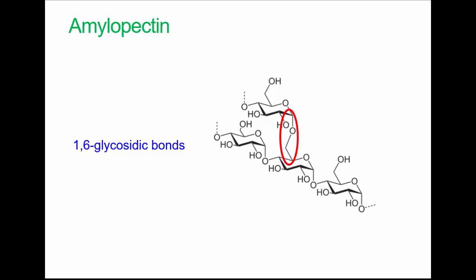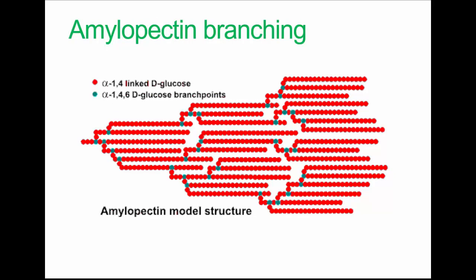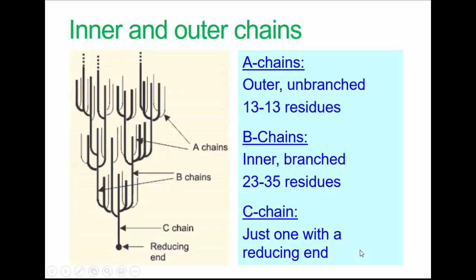Whether we have enzymes to digest the 1-6 bonds — gut bacteria probably do — it requires a different enzyme. Looking at a comparison of the two: chain length, bonding, we notice amylopectin can have millions of residues potentially. Amylopectin forms a regular branched structure, and we notice the green links involve 1-4-6 links, which is where the branch points form. There are three distinct types of chain, with the simplest being the C chain, which is on the reducing end.